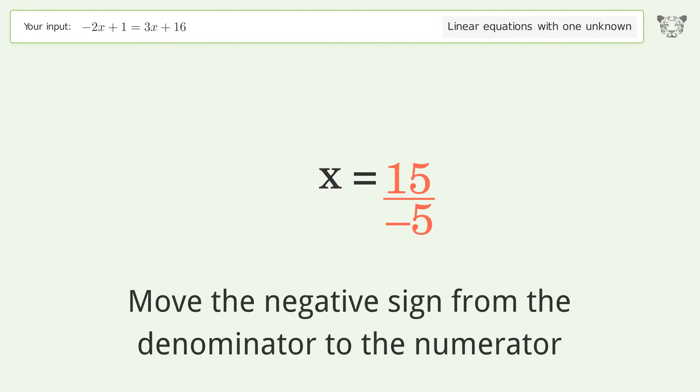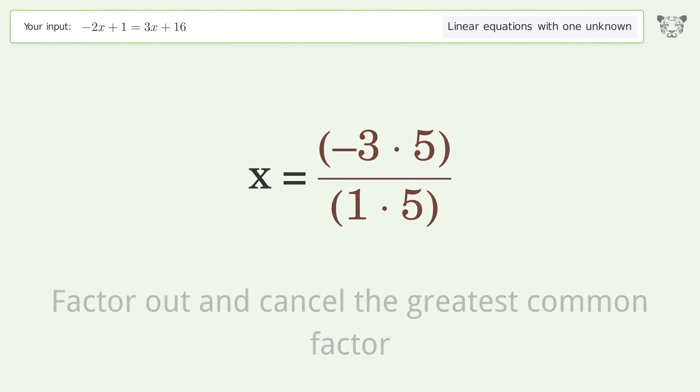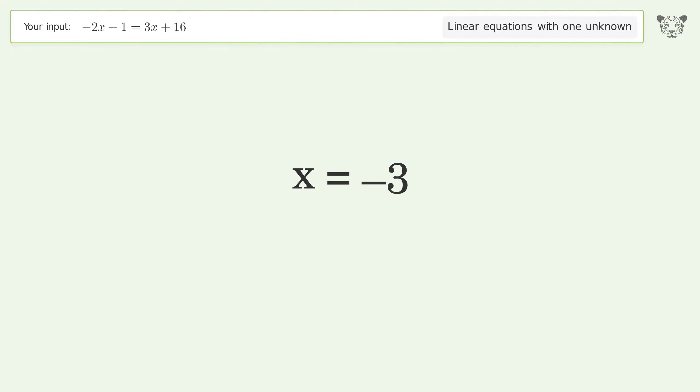Move the negative sign from the denominator to the numerator. Find the greatest common factor of the numerator and denominator. Factor out and cancel the greatest common factor. And so the final result is x equals negative 3.